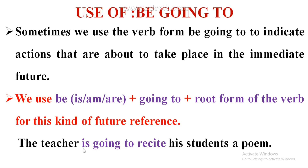Example: 'The teacher is going to recite his students a poem.' Here, 'is' — which is a form of 'be' — plus 'going to' plus the root form of the verb 'recite' has been used. That's it for this video. In the next video, I will cover adverbs. Jai Hind, Jai Bharat. Thank you.